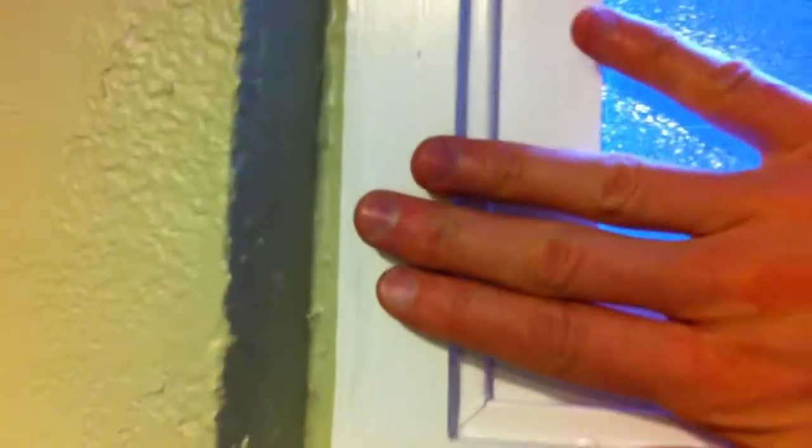And so I just mitered it 45 degrees all the way up here. And then I used caulk and put it on the back side of these and actually pressed it up against the window frame and let that dry.